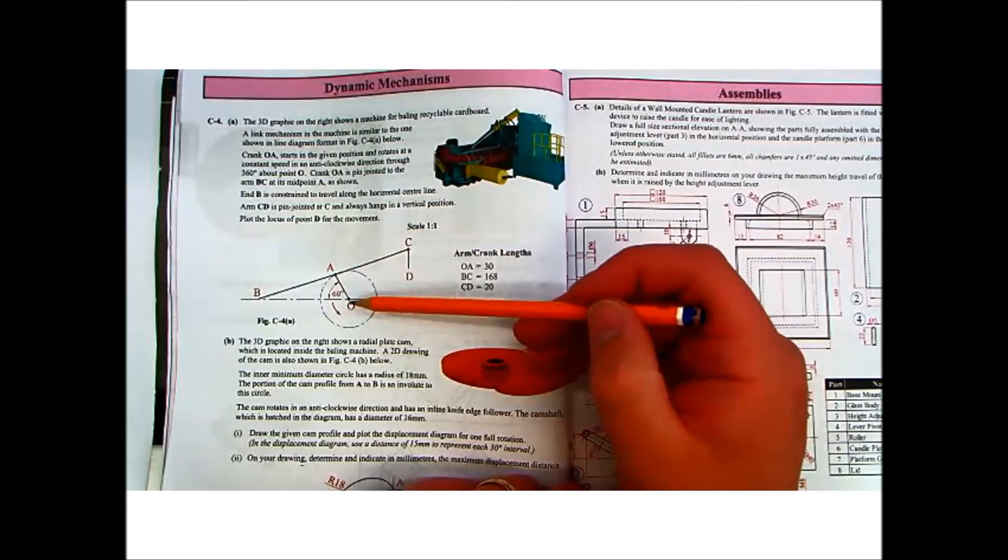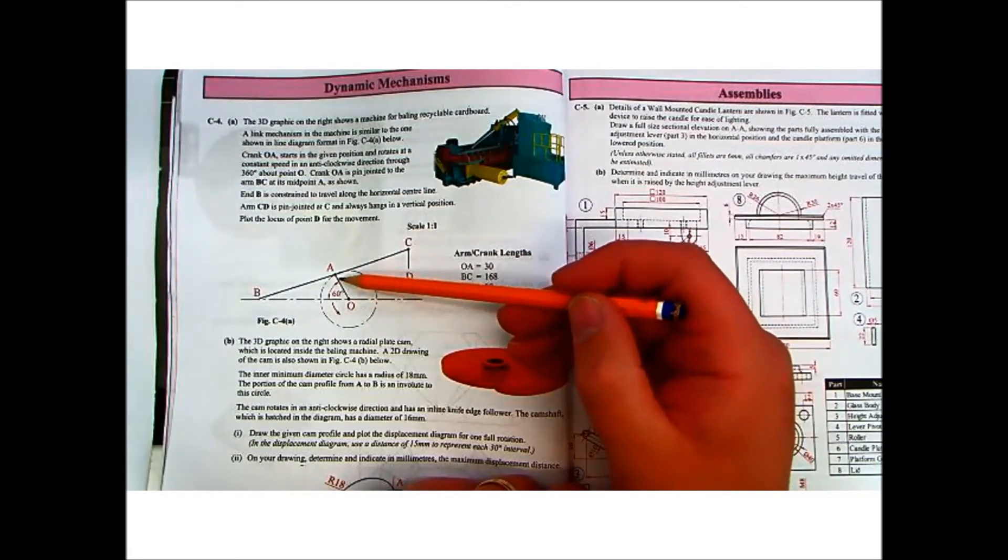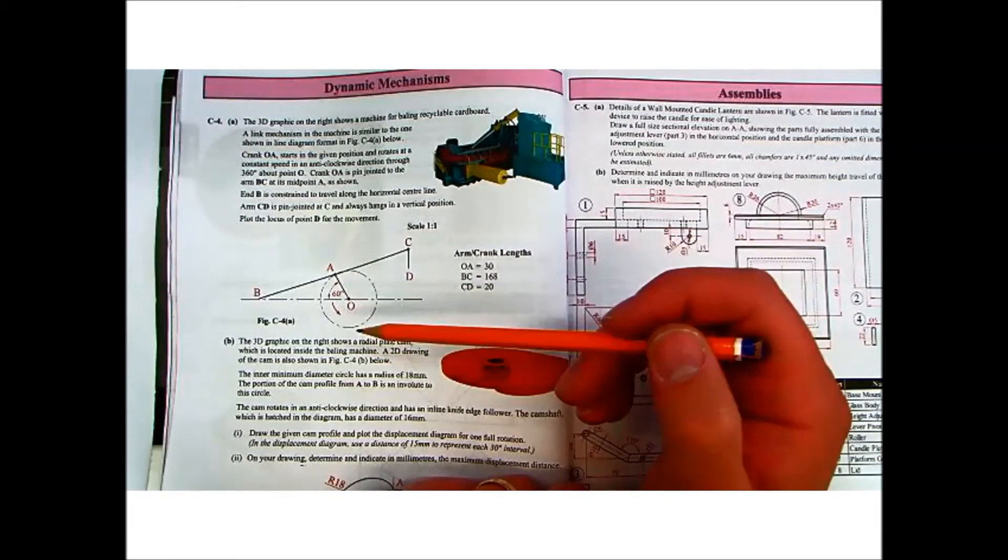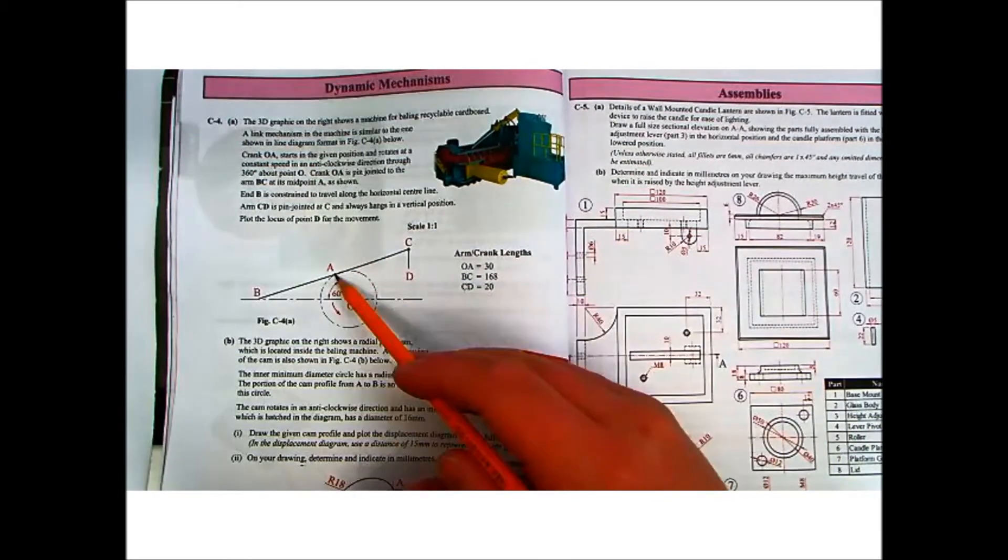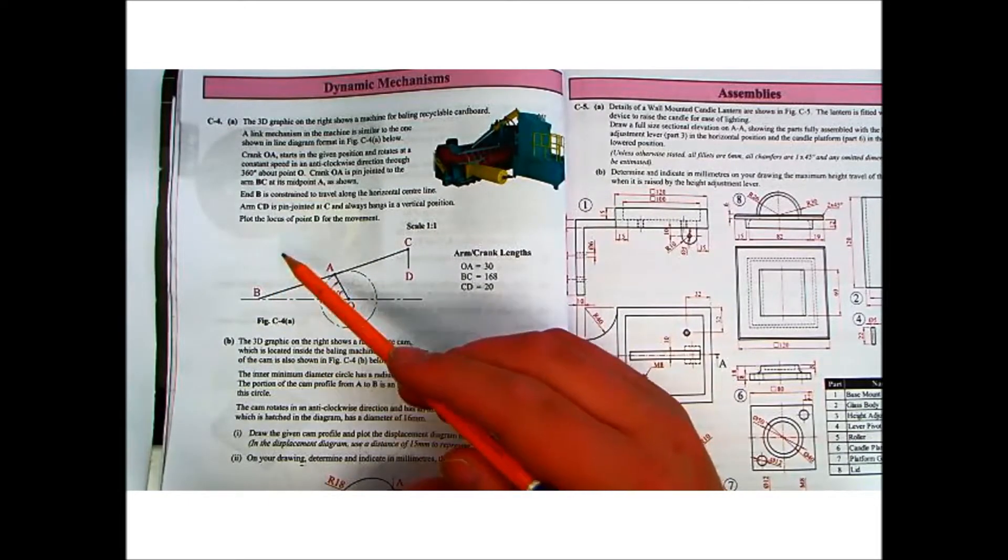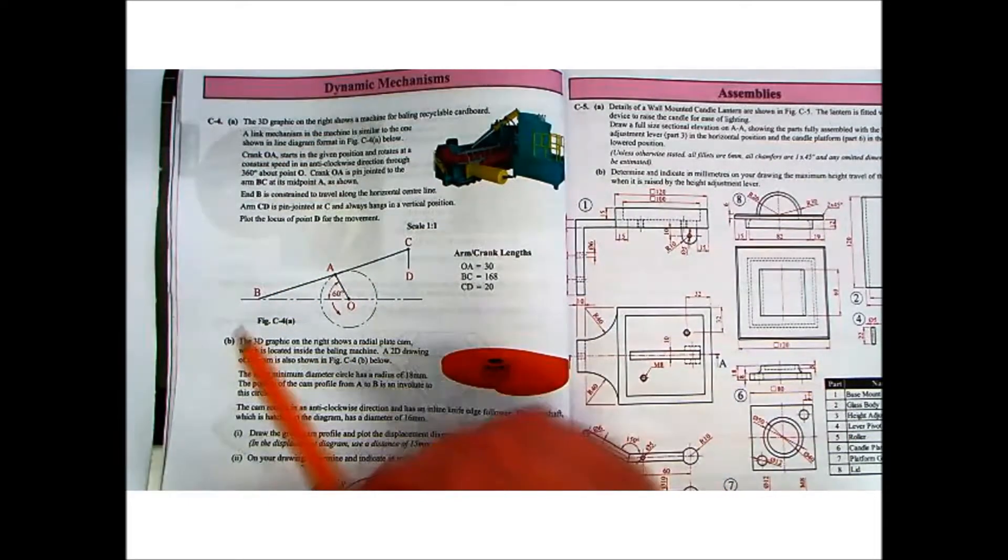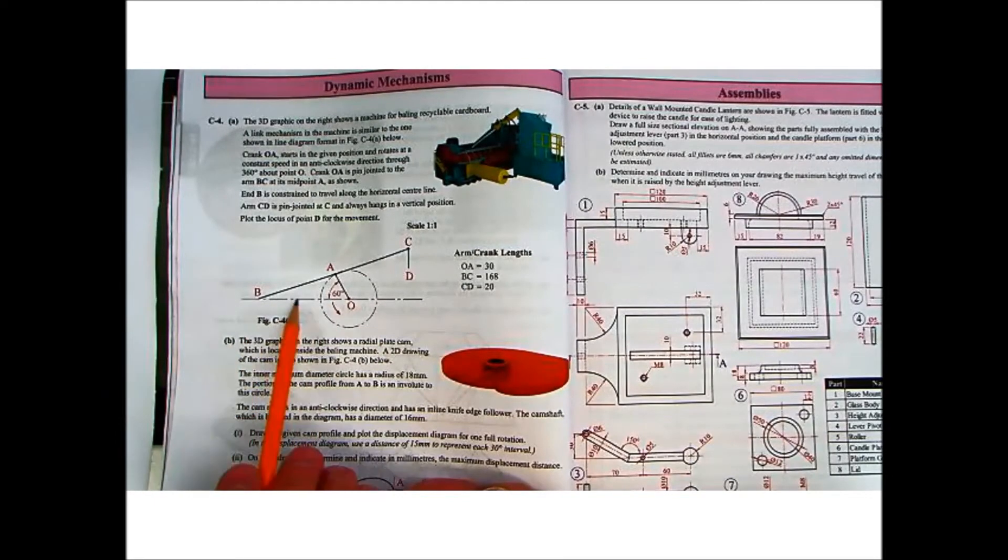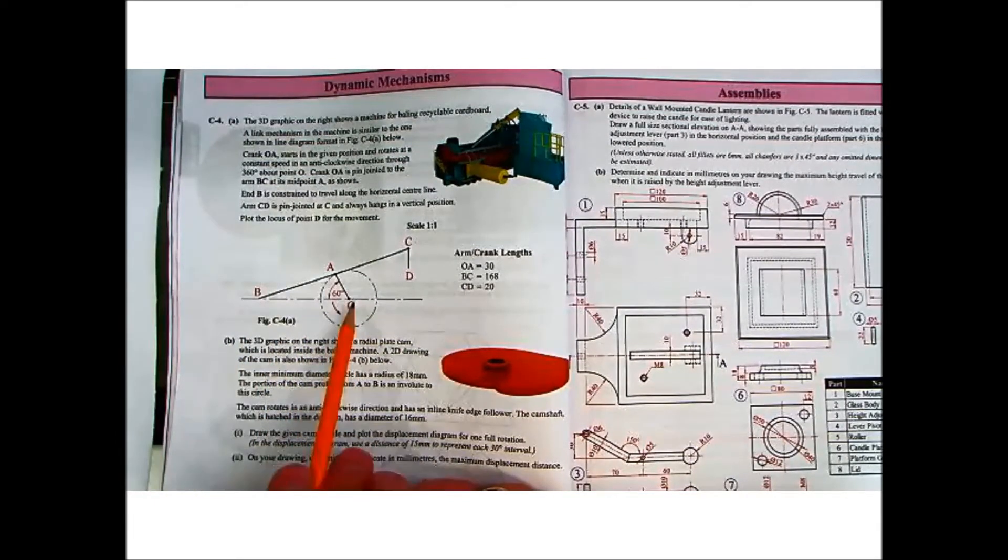The crank OA is pin-jointed to the arm BC at its midpoint, A, as shown. So A is the midpoint between B and C. And B is constrained to travel along the horizontal center line. So B has to stay on this horizontal line. That's its constraint.